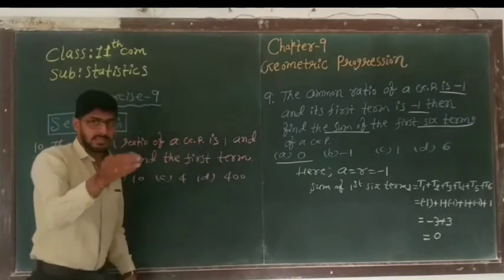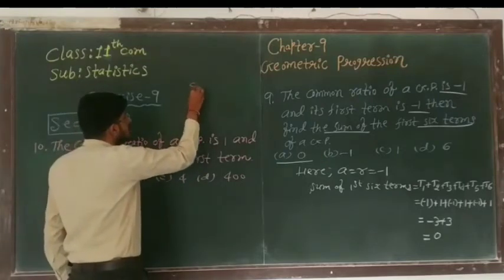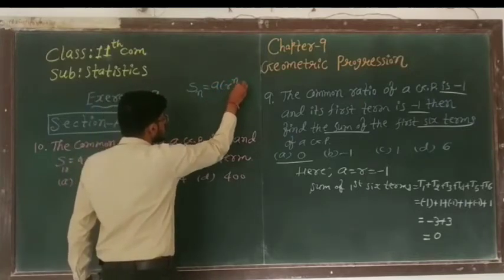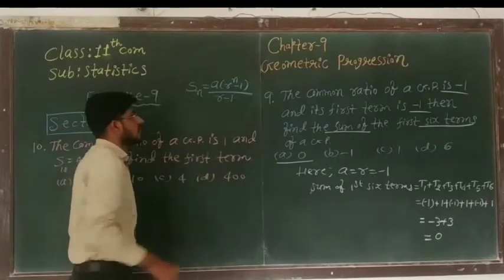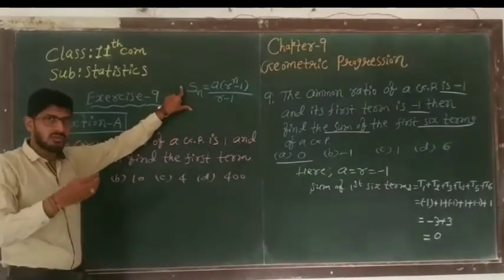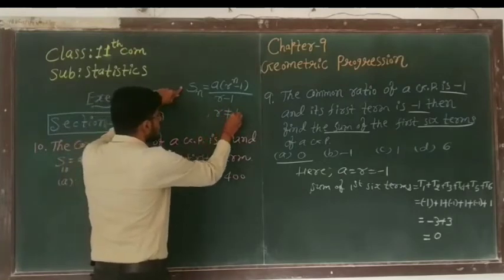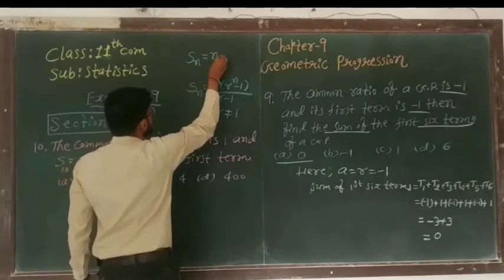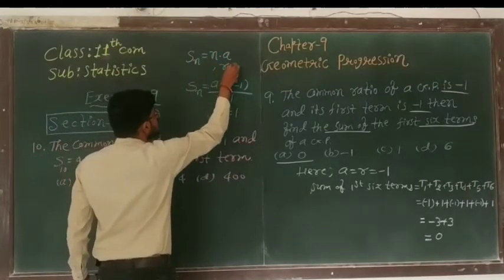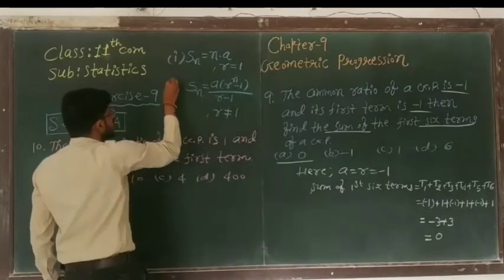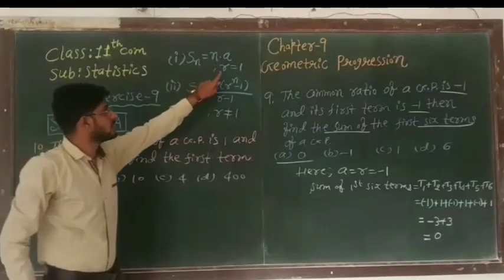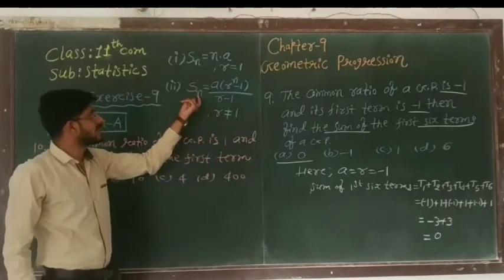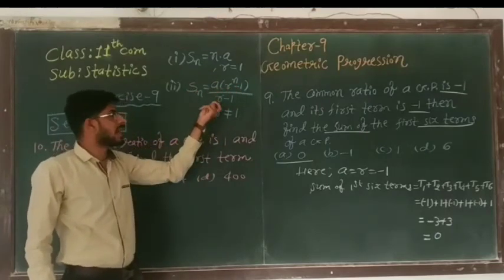The formula of Sn is Sn equal to a into r raise to n minus 1 upon r minus 1. But here the value of r does not equal to 1. If the value of r equal to 1 then Sn is equal to n into a where r equal to 1. Is it clear? If r equal to 1 then we choose Sn equal to na, and if r not equal to 1 then we choose Sn equal to a bracket rn minus 1 upon r minus 1.